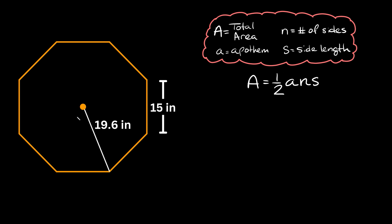In order to find the area of a regular polygon we can use this formula: A is equal to one half times little a times n times s, where A is the total area, little a is the apothem, n is the number of sides, and s is the side length.